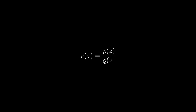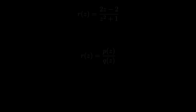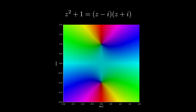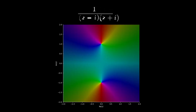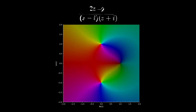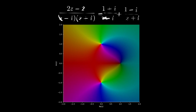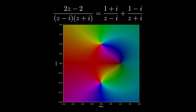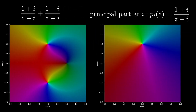Let's now look at rational functions. When we look at the polynomial in the denominator, we can write it as a product of its zeros. When taking the reciprocal, the zeros turn into poles — these are exactly the poles of our rational function. When we rewrite the function through a partial fraction decomposition, we get two terms, called the principal parts, which describe how the function behaves near our poles.